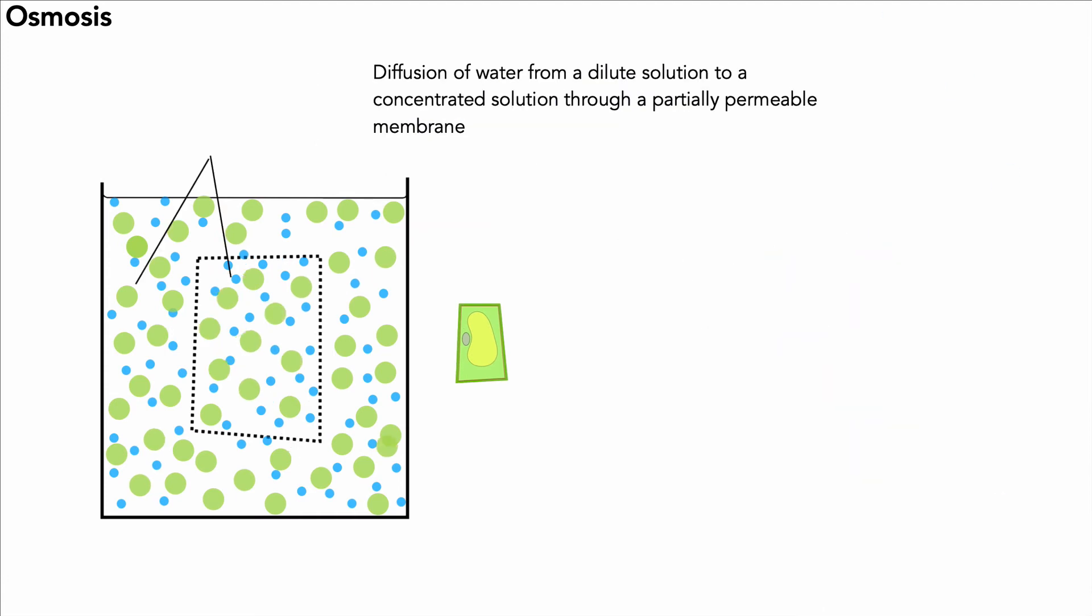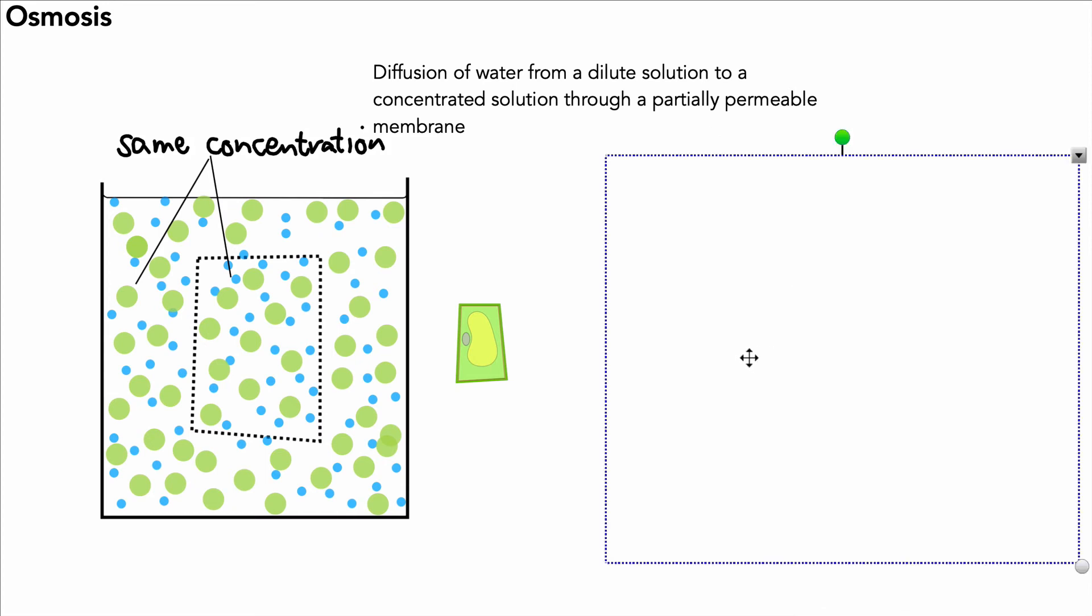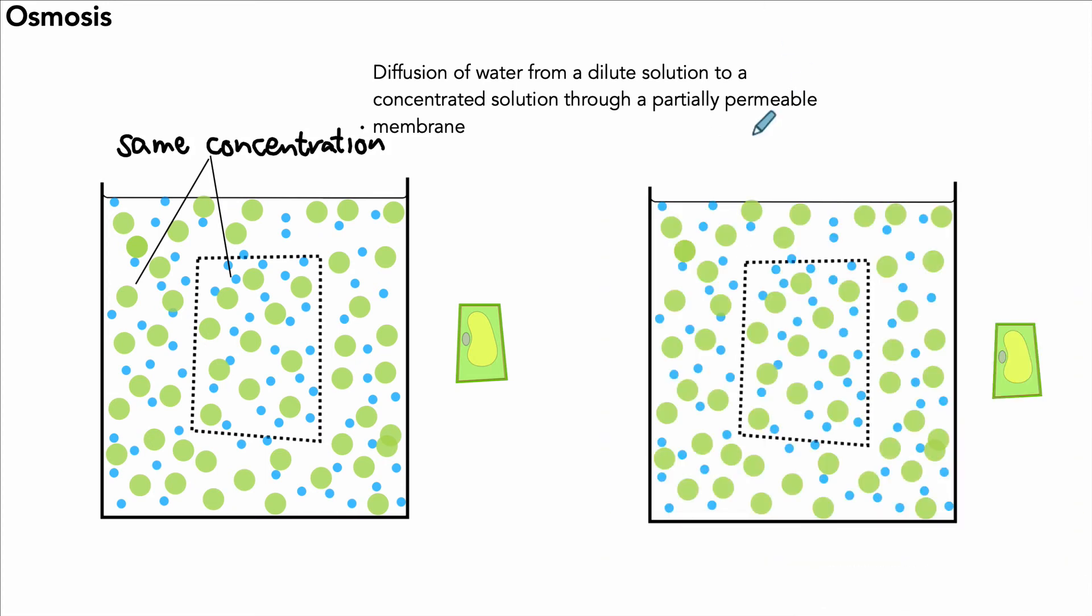Now what happens if we have the same concentration inside compared to the outside? If the two concentrations are the same, as you can imagine, there would be no overall change in the cell. The cell will look the same, and in fact we say there is no net movement of water.